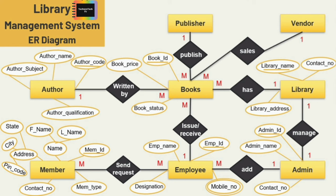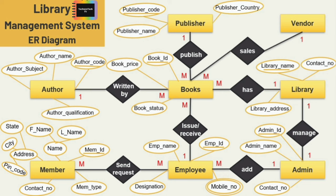Next is the entity author: I am taking four attributes — author code, author name, author subject, and author qualification — and author code is the key attribute. Next is publisher: I am taking three attributes — publisher code, publisher name, and publisher country — and publisher code is the key attribute. Last is the entity vendor: I am taking two attributes — vendor code and contact number — and vendor code is the key attribute.